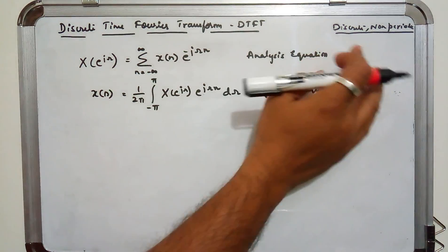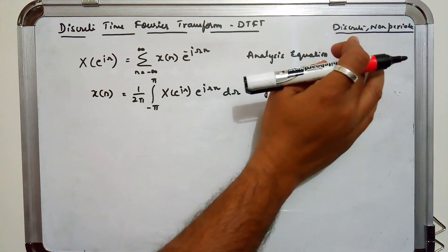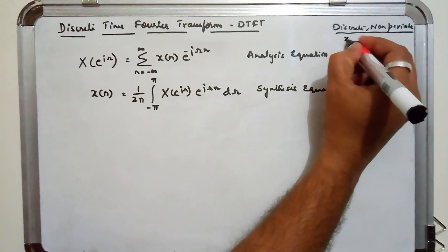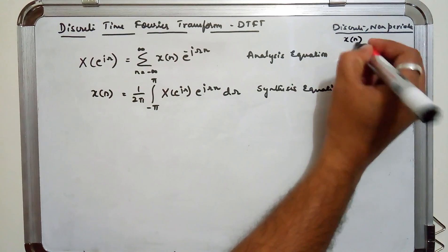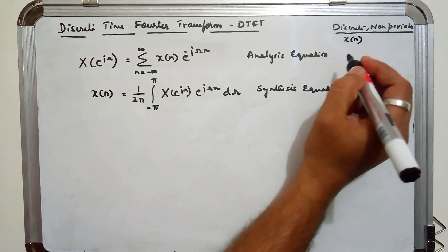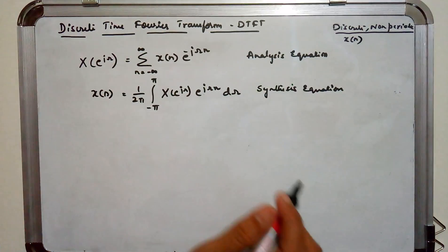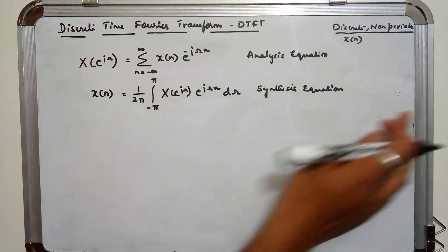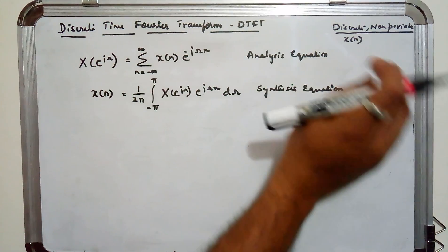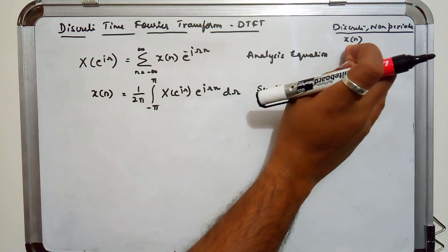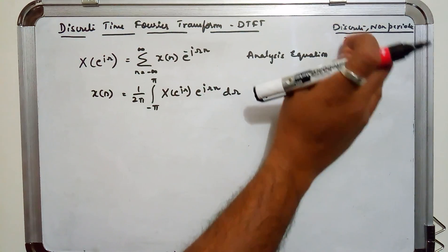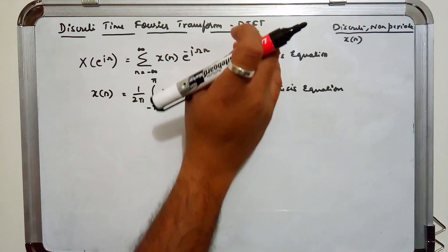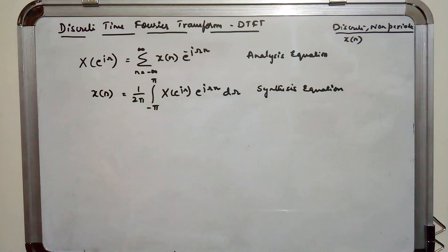If a signal is discrete — when you say it is discrete, it is X[n], in contrast with X(t) in the continuous time domain. So X[n] is discrete and it is non-periodic. The transformation available for such a signal is DTFT.